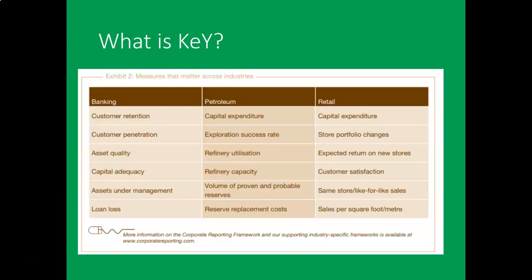What is KPI? Measures that matter across industries. Starting with Banking: Customer Retention, Customer Penetration, Asset Quality, Capital Equity, Assets Under Management, and Loan Loss. Petroleum: Capital Expenditure, Exploration, Refinery Utilization, Refinery Capacity, Volume Improvement, and Probable Reserves Replacement Costs. Retail: Capital Expenditure, Store Portfolio Changes, Expected Return on New Stores, Customer Satisfaction, Same Store or Like-for-Like Sales, and Sales per Square Foot and Meter. That's KPI — key to business monitoring and controlling.